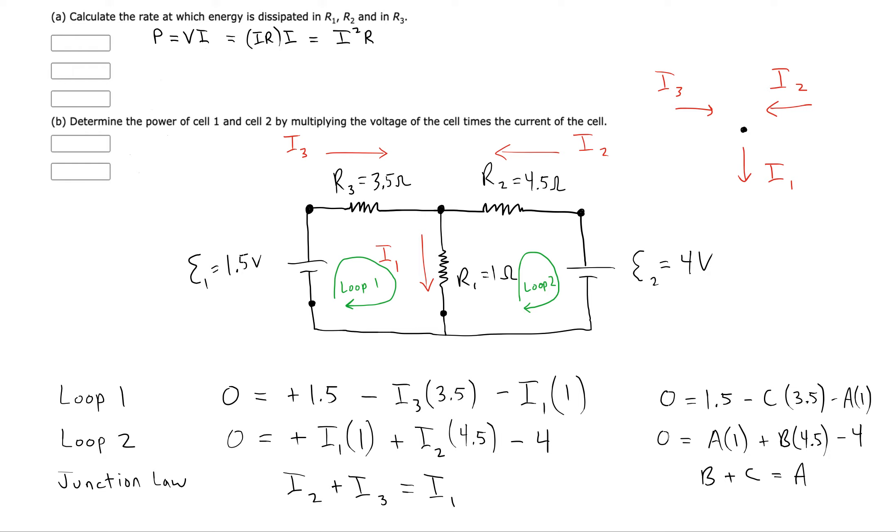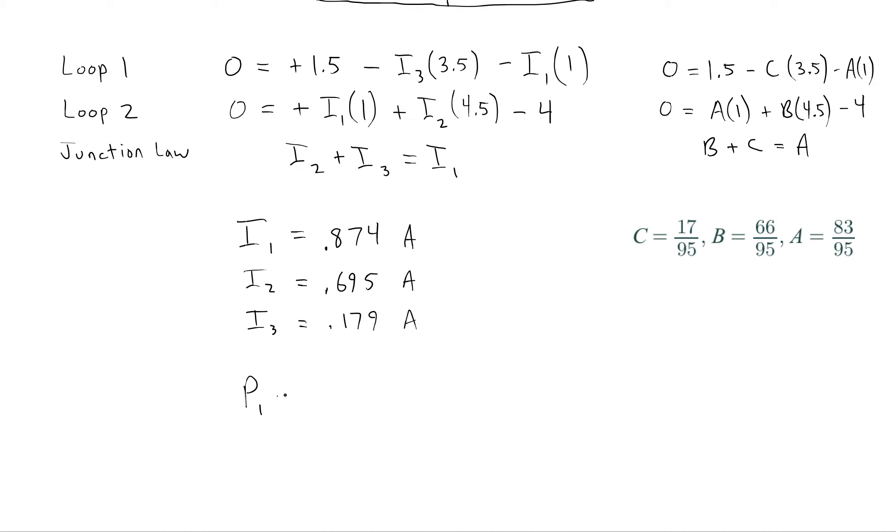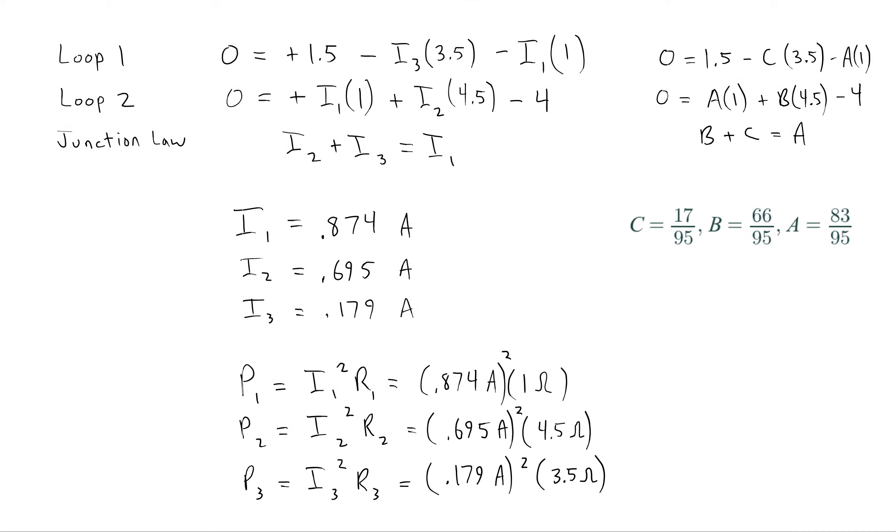So, with that in mind, we'll do P1 equals I1 squared times R. Okay, so I think here I've multiplied all the currents squared times their associated resistors.